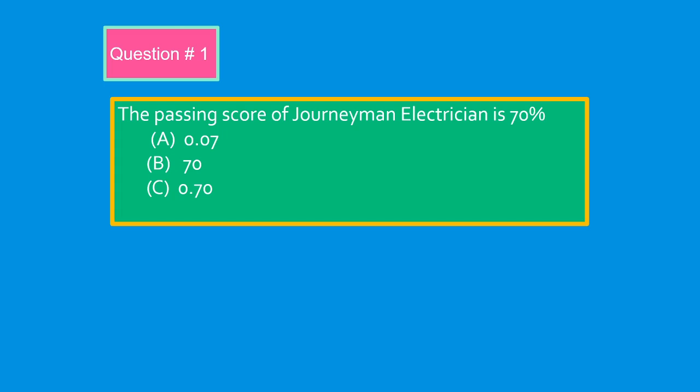Question number one. The passing score of journeyman electrician is 70%. A, 0.07. B, 70. C, 0.70.